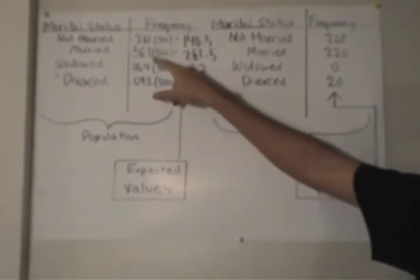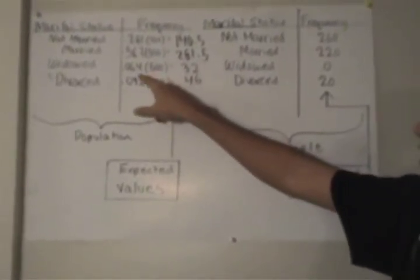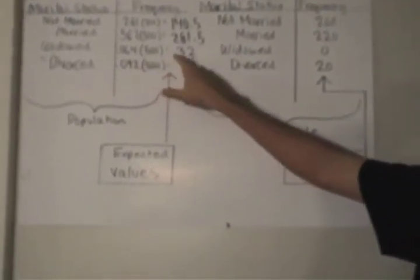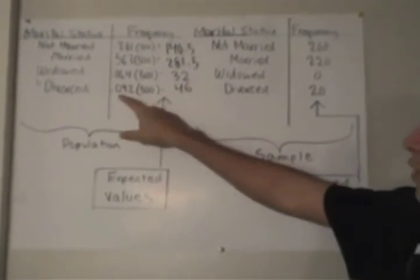For married, the percentage was 56.3%, so we take 0.563 times 500, which gives us 281.5. For widowed, it's 0.064 times 500, which gives us 32. And then for divorce, it's 0.092 times 500, which gives us 46.